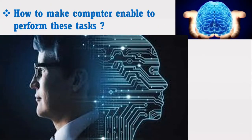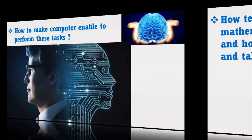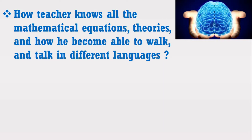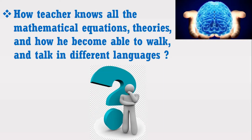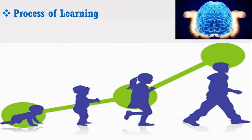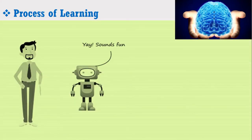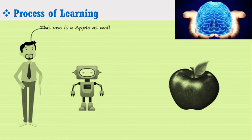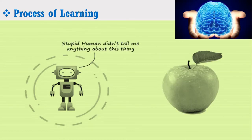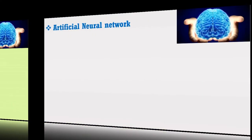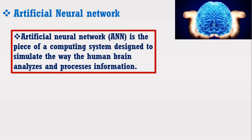The question arises: how can we make a computer system perform these tasks? To answer this, consider again the teacher example. How does the teacher know all the mathematical equations, theories, and how did he become able to walk in different directions and talk in different languages? The answer is that the teacher has gone through the process of learning for years, from his childhood. Similarly, artificial neural networks can also be enabled to perform tasks by going through a learning and training process. An artificial neural network is a piece of a computing system designed to simulate the way the human brain analyzes and processes information.